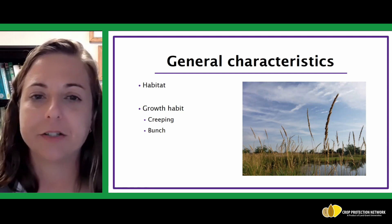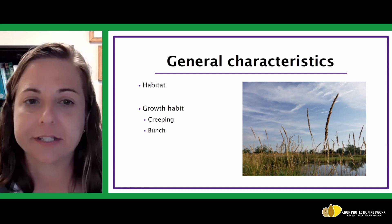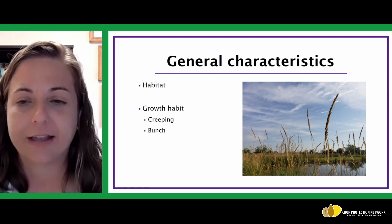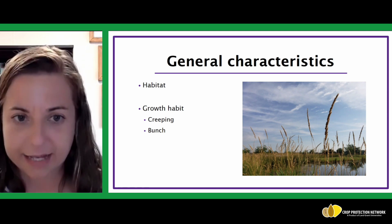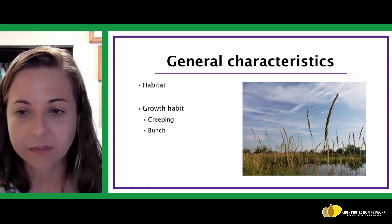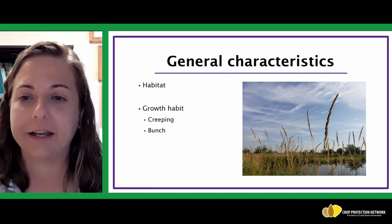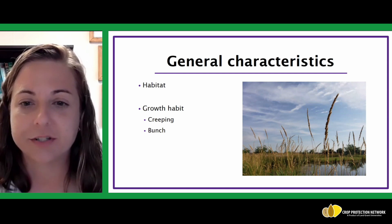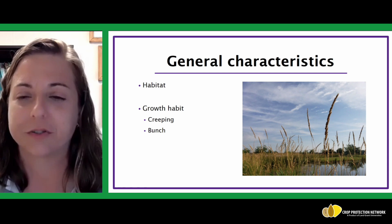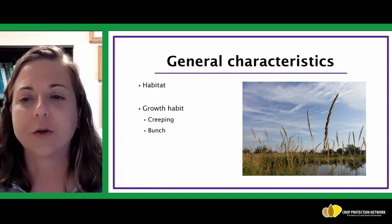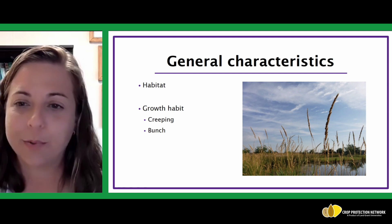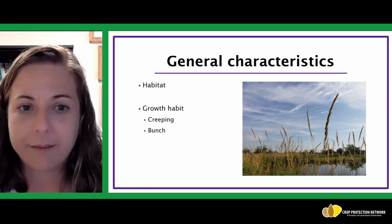The first thing we need to look at are some general characteristics of grasses. As you start the process of identifying any plant, but in this case grasses, it's important to think about the habitat. I've got a photo here on this slide of reed canary grass, which is a plant that you're only likely to find in areas associated with water or saturated soils or very moist soil. So if you're on an upland slope, you're not going to consider that as an example of a plant that you might be looking at.